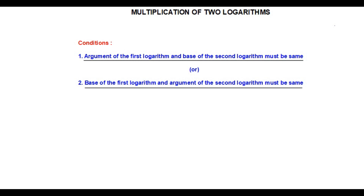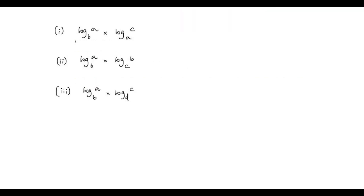Let us look at some examples. Here we have three examples. In the first example, I am going to check the first condition: I take the argument of the first logarithm and the base of the second logarithm — both are the same. So we can multiply these two logarithms.